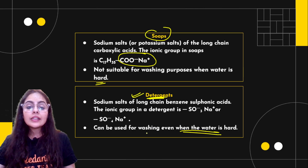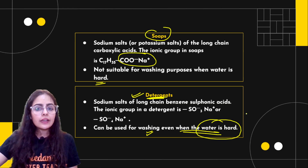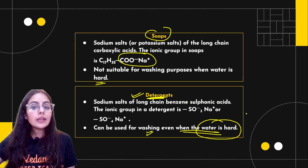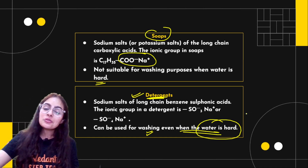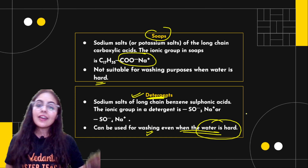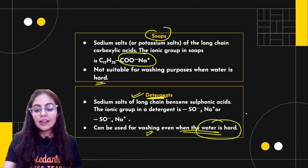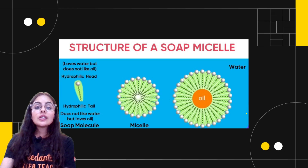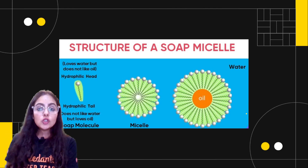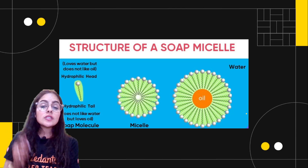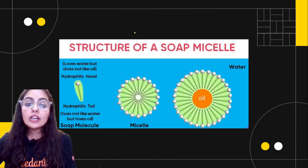Detergents, on the other hand, cannot react with calcium and magnesium ions, so they work well with both hard and soft water. This is why detergents are a better cleansing agent compared to soap — a common two-mark question. The structure of soap looks like a tadpole or sperm structure. The tail is the hydrophobic hydrocarbon chain and the head is the ionic part, called the hydrophilic part.